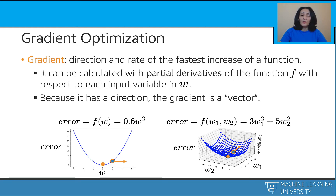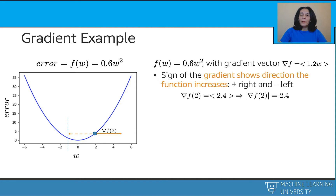Let's build intuition for the one-dimensional case. For a model with one weight W, if the error function is a quadratic-like function — say 0.6 W squared, think sum-of-square-errors-like functions — the gradient is computed to be 1.2 W. At W equals 2, the gradient is 2.4 with a positive sign, showing the direction of function increase is to the right, so we should move in the opposite direction — to the left — to decrease the error. Note that moving the full 2.4 units to the left might go beyond the minimum, so we want to take a step proportional to the gradient size, controlling the step size by a parameter.